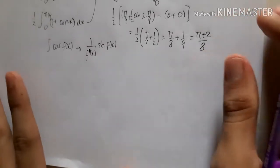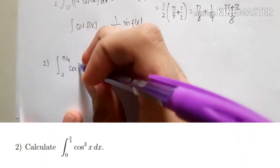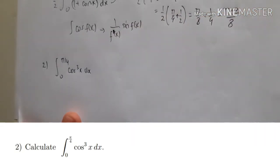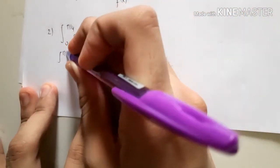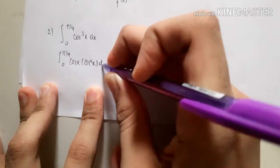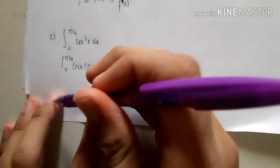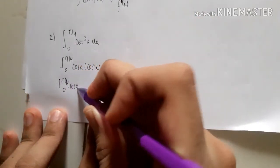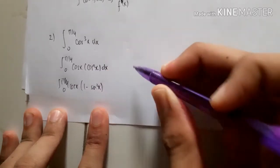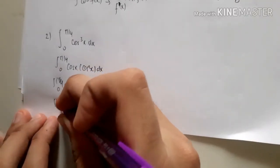For number two: the integral of cosine to the power of three x, with limits from 0 to π/4. To do this, we separate it into cos x times cos²x, and then change cos²x into (1 − sin²x) dx.